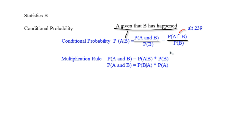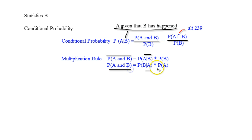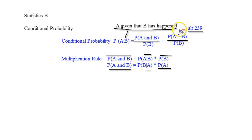Now the multiplication rule: if you are given the probability of A given B, or B given A, you multiply them to get the probability of A and B. There are two different formulas here so you have to be careful about which one you use. If you wanted to use the right notation for the intersection formula, you would use this one right here — this is just the intersection, this is just 'and'.